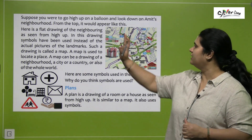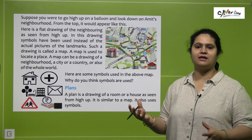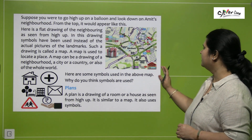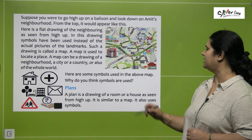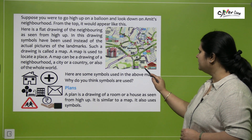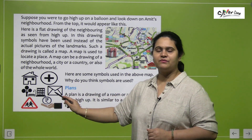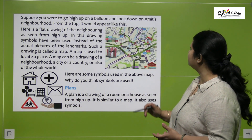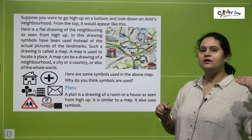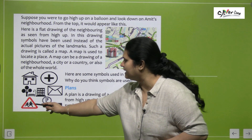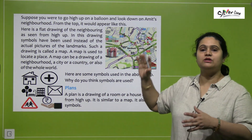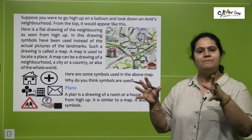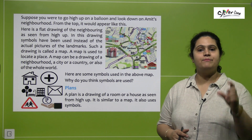This is a flat drawing of the neighborhood as seen from high up. Yahan par aapne objects ko use na karke, un places ko use na karke, unke symbols use ki hain. Aapne yahan par flats ke liye ye symbol use kiya hai. Here you see a mailbox — an envelope — so that indicates that this is a post office. Then some places show a crossing. Whenever you see something like this, all these symbols are used in this drawing. This is a flat drawing that is used to show the neighborhood — aur is flat drawing ko kya kehte hain? Map.